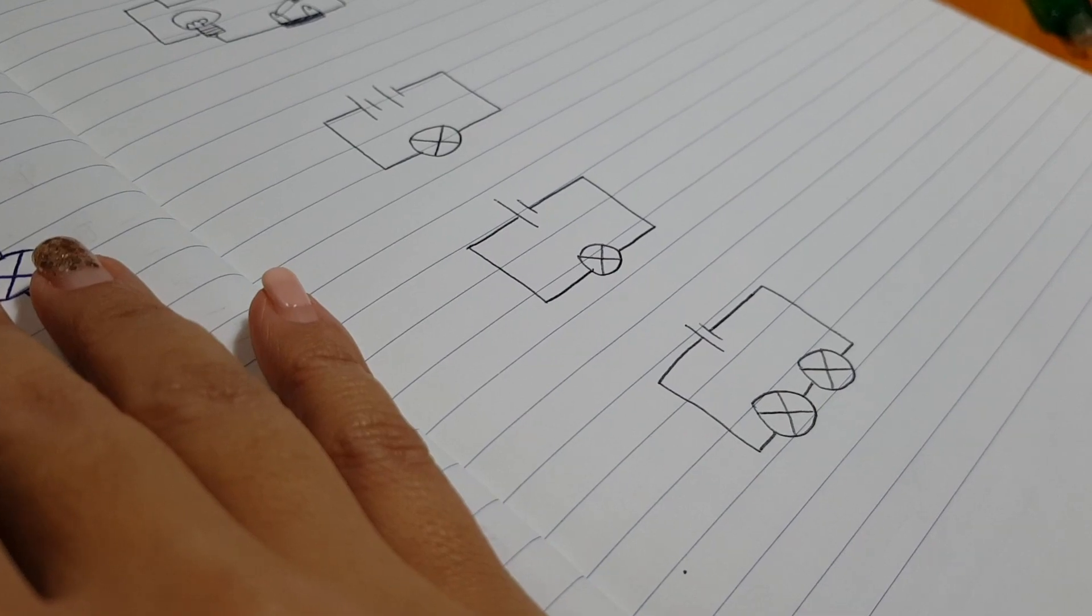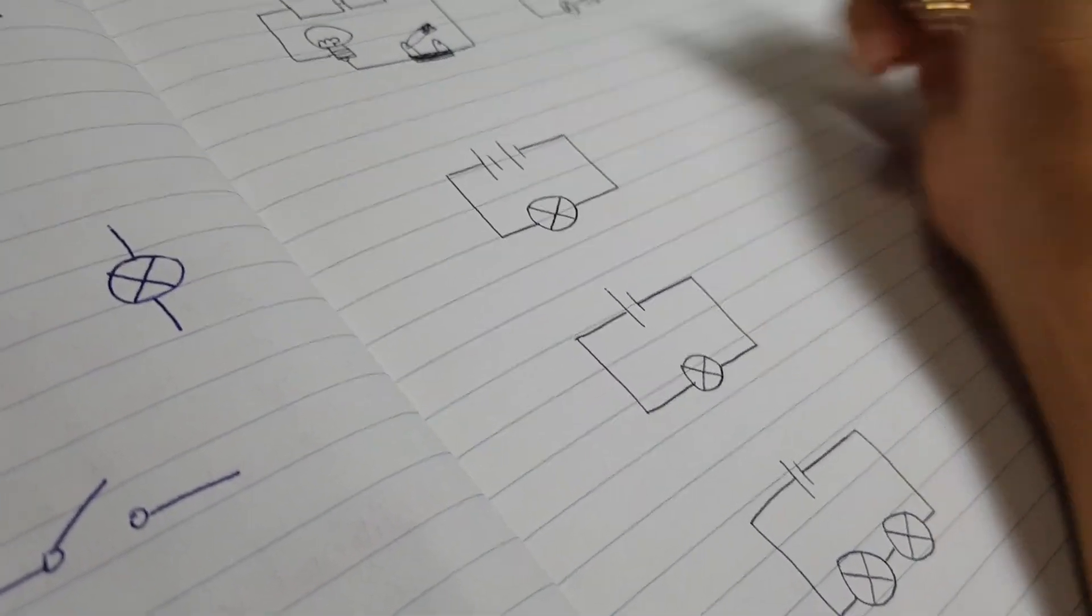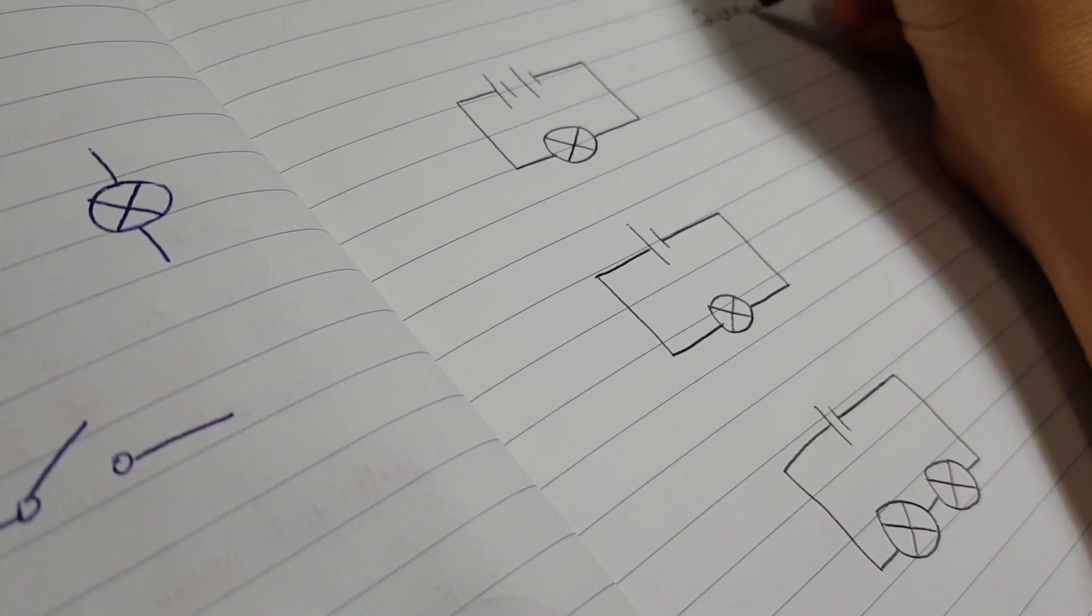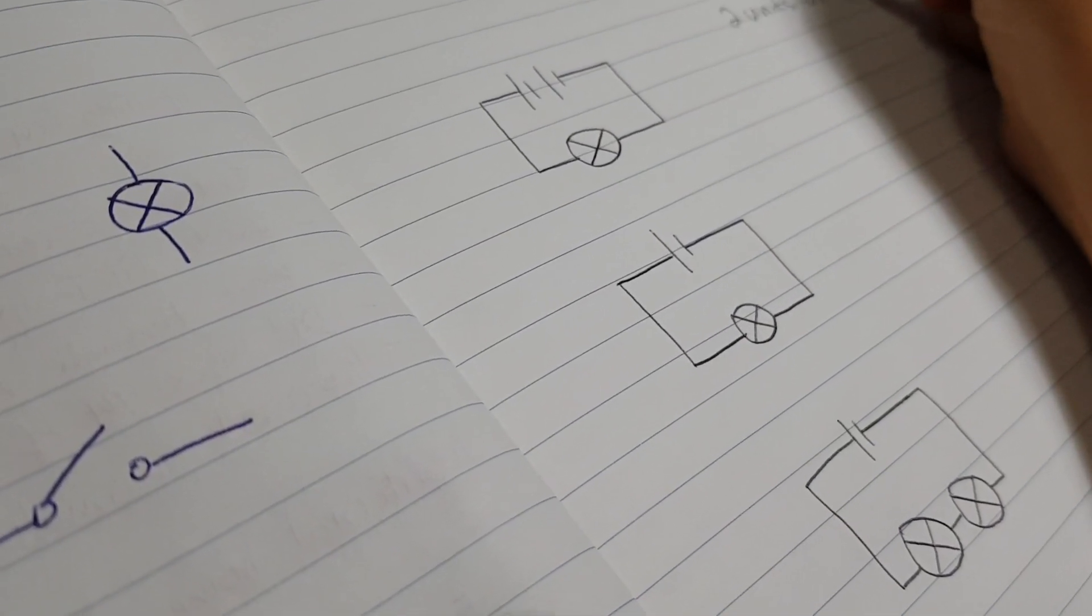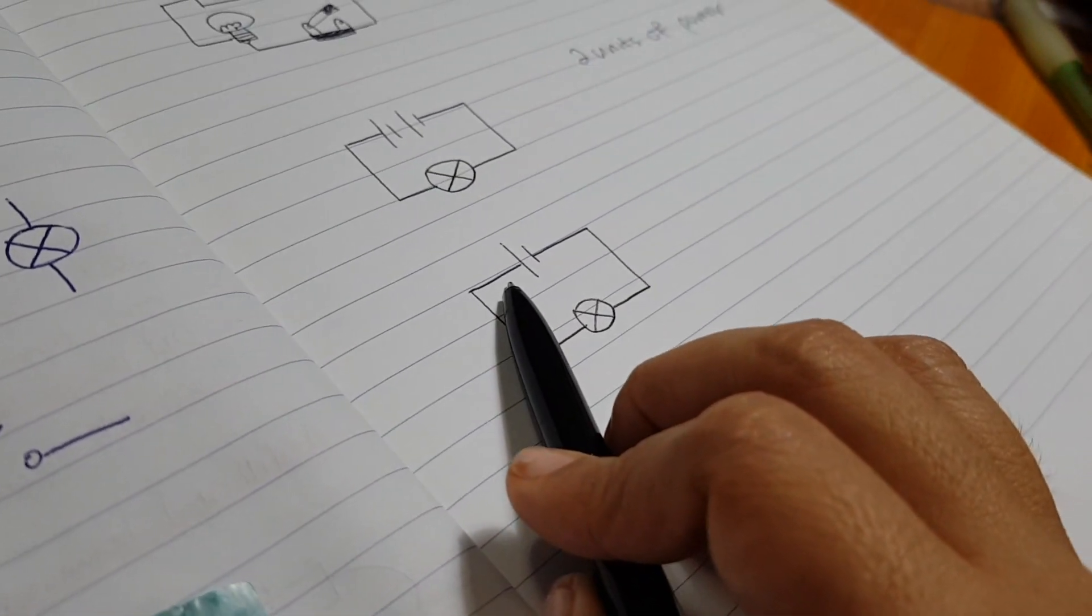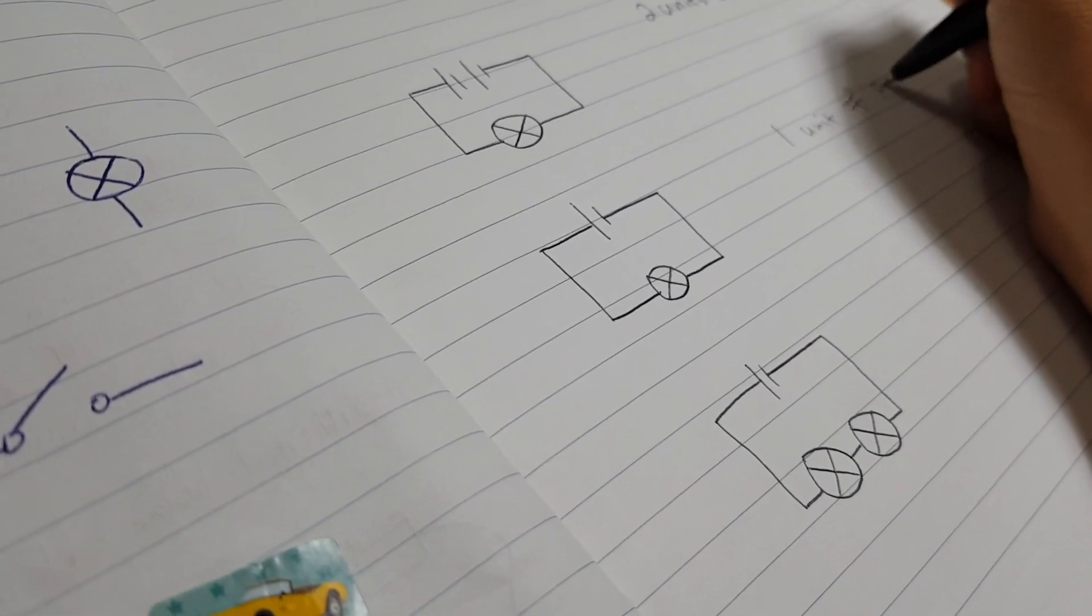two batteries means each battery is one unit of power. So two batteries, there will be two units of power. Right or not? This one, how many units of power? One. One unit of power.